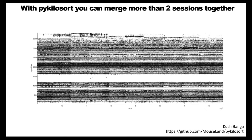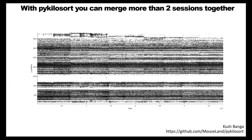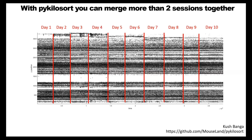PyKilosort also solves the same drift problems, but it is also efficient in terms of memory usage. This means you can actually merge more than two sessions together — here I'm showing 10 sessions merged together. The black lines going horizontally from one day to another are quite well aligned with each other, meaning the algorithm was able to correct for any vertical shifts in the data. This version is published and everyone can use it.